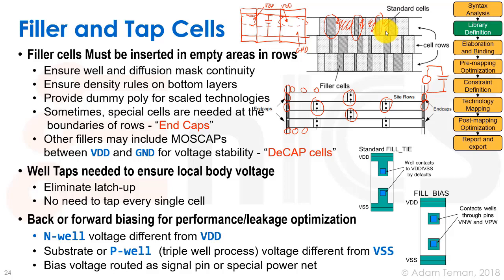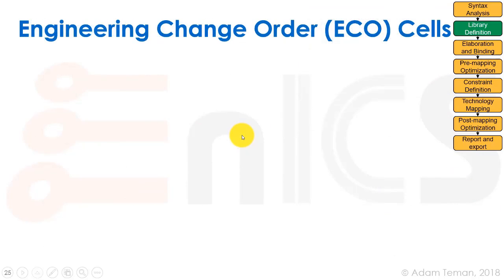Body biasing — changing the threshold voltage via the well — is also possible using well tap cells. It's not common in modern technologies except for fully depleted SOI. If desired, the well tap cell is modified so that the well connects to a well voltage instead of VDD, enabling body biasing. Special biasing cells may also be provided in the library.